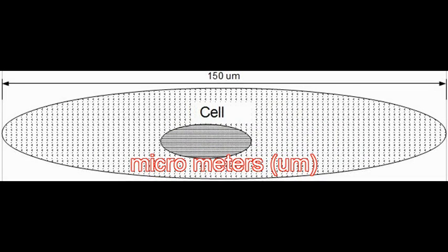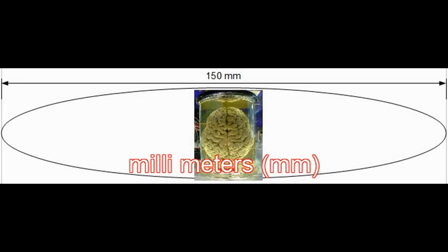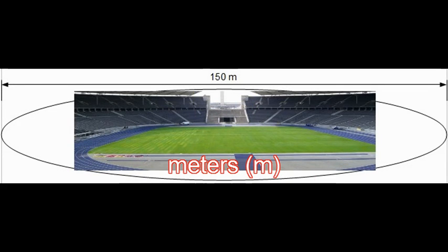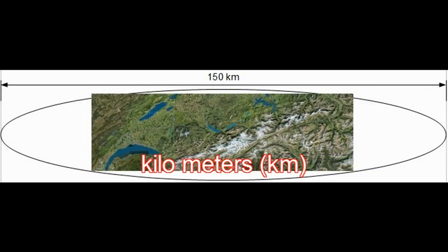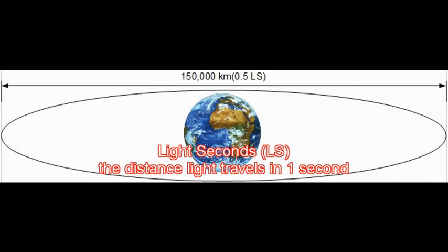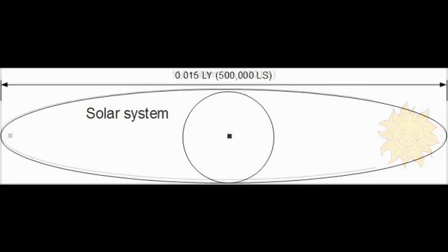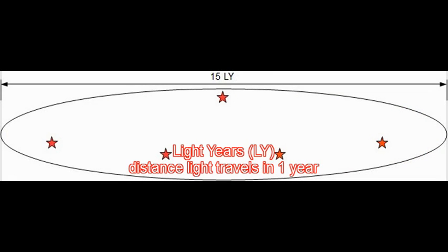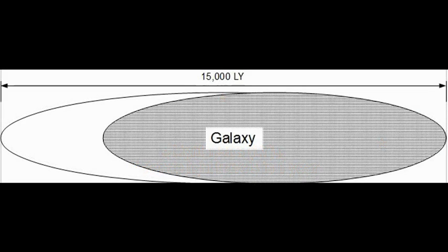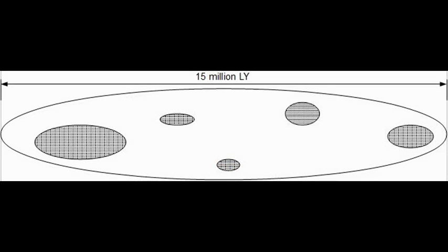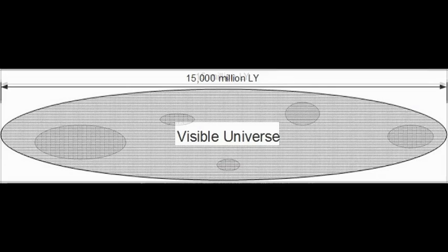With each multiplication of size 1,000-fold, we reach sizes of brains, ballparks like the one in the Think Park, counties or small countries, our Earth, our Sun, our solar system, our neighborhood in the Milky Way, galaxies, groups of galaxies, and the entire observable universe.